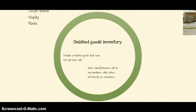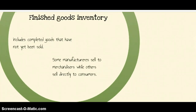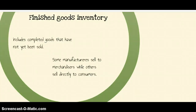The third type of inventory is finished goods inventory. These include goods that have been completed but are not yet sold. Some manufacturers sell their products to merchandisers, while others sell directly to consumers. For example, Dell is a manufacturer that sells directly to consumers, whereas Kellogg's cereal company does not sell directly to consumers — they sell to a merchandiser, and you have to buy their product from a merchandiser.